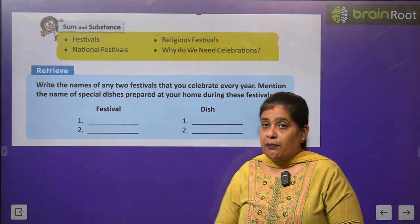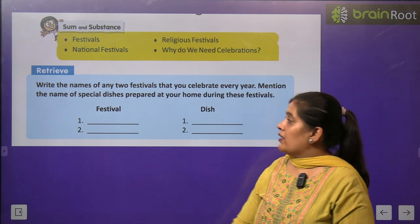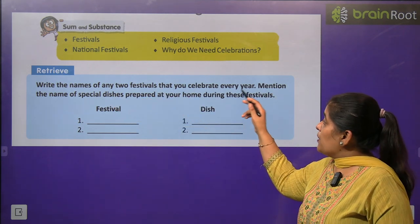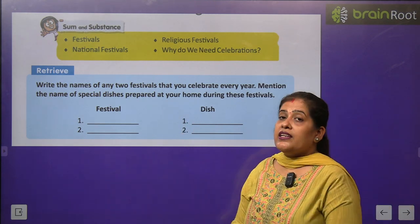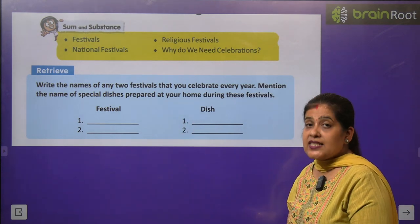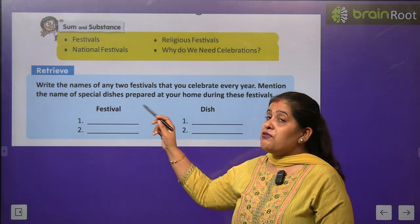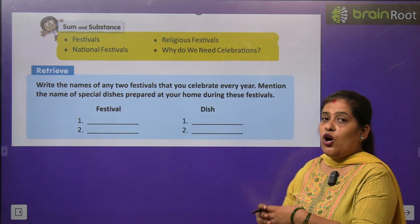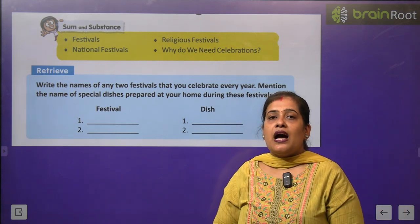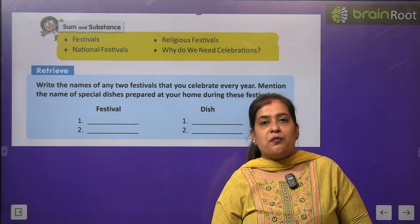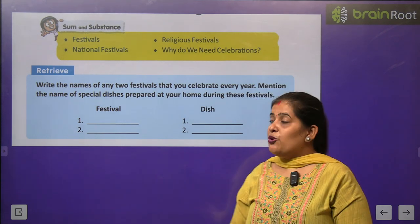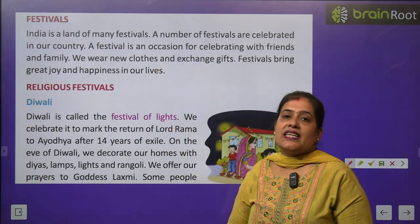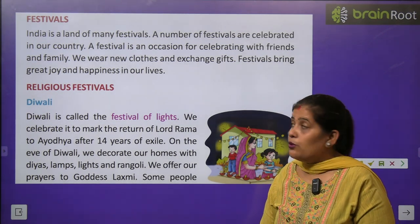Before we start the chapter, first we will do one question. Write the name of any two festivals that you celebrate every year. ऐसे दो फेस्टिवल के नाम लिखिए जो आप हर साल मनाते हैं। Mention the name of special dishes prepared at your home during these festivals. और उन व्यंजनों के नाम लिखिए जो उस त्योहार पर आपके घर में बनते हैं। This question you will do by yourself. Festival — हम कहते हैं त्योहारों को।